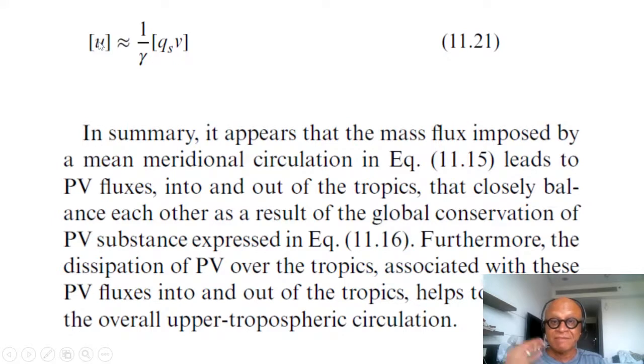Okay, think about it. So we have PVS being advected back and forth and nearly zero across the latitude line on an isentrope, but the dissipation of PVS is a key term in maintaining the zonal mean zonal winds.